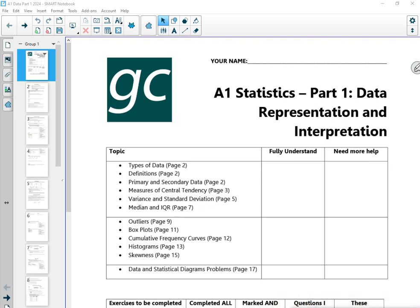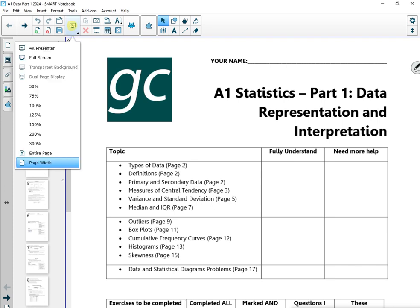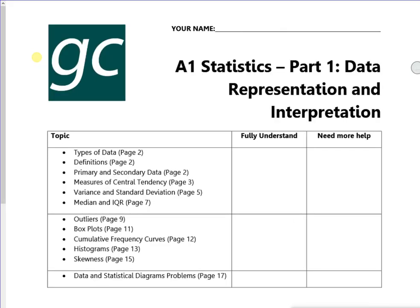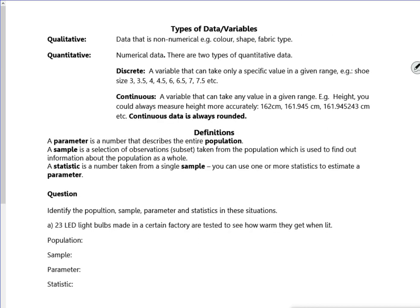Hi everyone, this is the brand new 2024 data pack. Let's have a look. It starts off with some generic definitions that you should know. Qualitative means non-numeric: color, shape, fabric type, make, models, that type of thing.